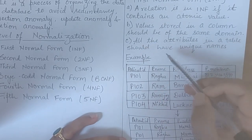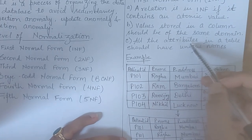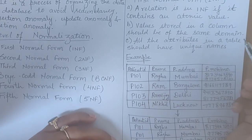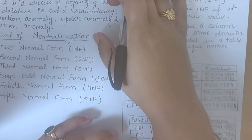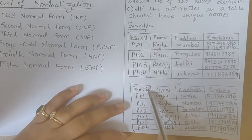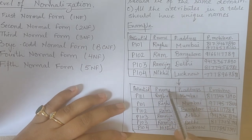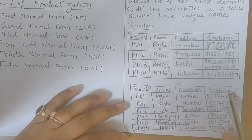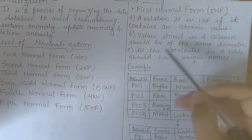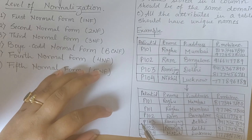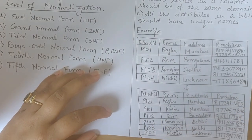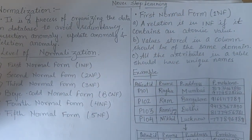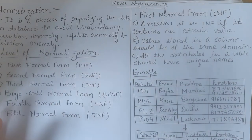The third rule says all the attributes in the table should have unique names — all column names should be different. Check the table: the attribute names are patient ID, patient name, patient address, and patient mobile number — all unique names. All three rules are satisfied, so we can say this table is in 1NF. All three rules must be satisfied to say the table is in 1NF.